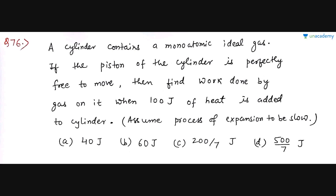Now let's discuss a few more questions on thermodynamics. The first question is mainly based on the first law, so let's understand what to do — try this question first and then see the solution. The question says that a cylinder piston assembly has a monatomic ideal gas.